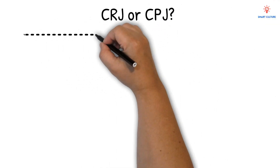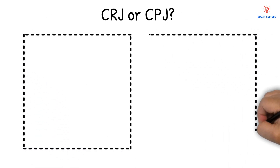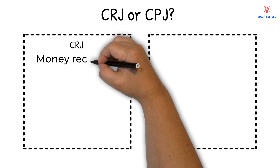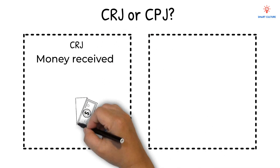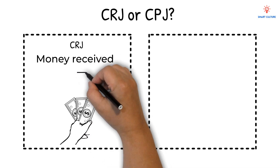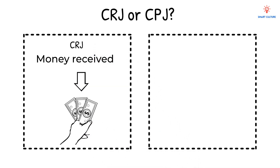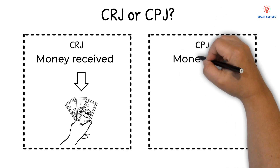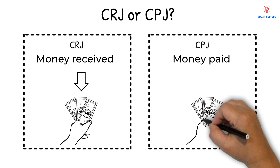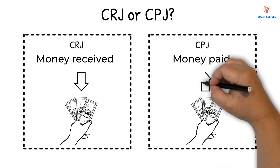In this video we will learn how to decide where to post transactions in the CRJ or the CPJ. The CRJ records every time the business receives cash from sales, customers or the owner. All transactions where money is received will be recorded in the CRJ. The CPJ on the other hand is used when the business pays money, like for rent, wages or buying goods. We use the CPJ when money goes out of the business.